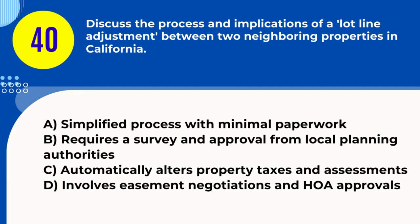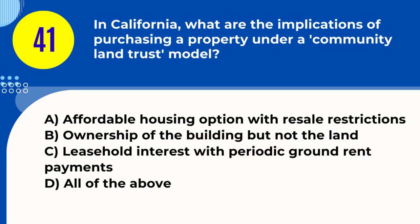Question 40. Discuss the process and implications of a lot line adjustment between two neighboring properties in California. A. Simplified process with minimal paperwork B. Requires a survey and approval from local planning authorities C. Automatically alters property taxes and assessments D. Involves easement negotiations and HOA approvals. Answer: B. Requires a survey and approval from local planning authorities. Explanation: A lot line adjustment typically involves a survey and must be approved by local planning authorities.